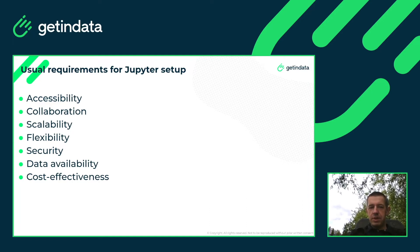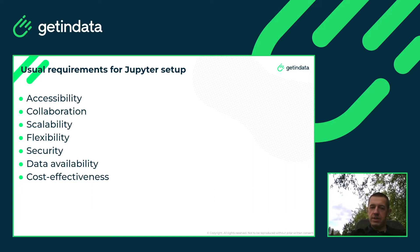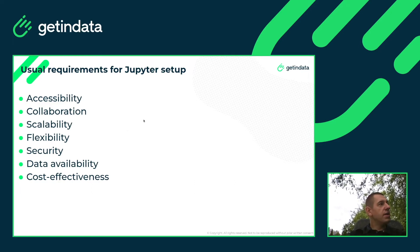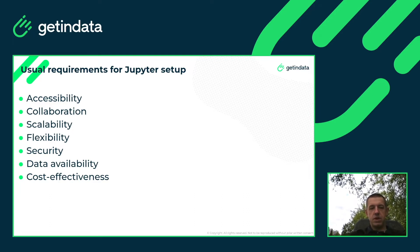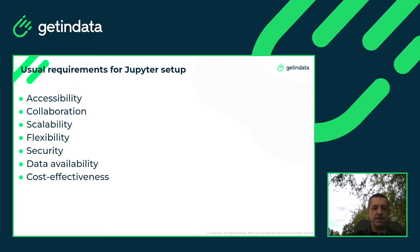Knowing these seven requirements, let's check how the seven architectures support them. Within each architecture, all seven points are listed in different colors. Green means the setup nicely supports that requirement. Red means the capability is not supported at all — and if it's important to you, it may be hard or impossible. Yellow means something in between — it is supported, but could be done better.